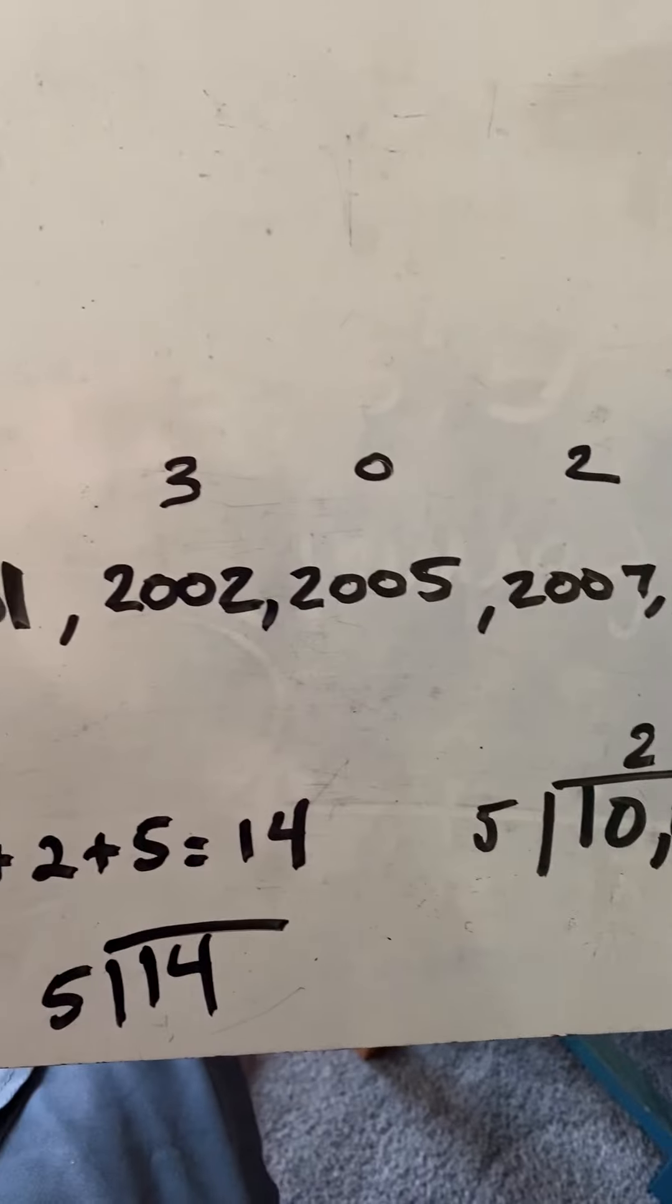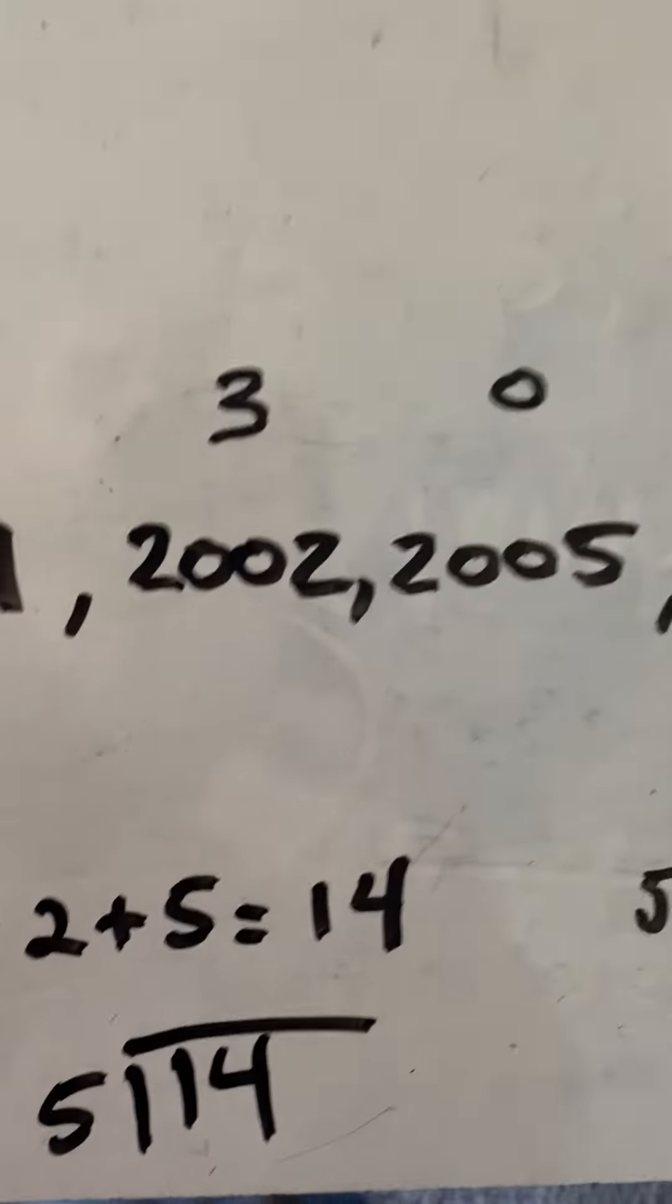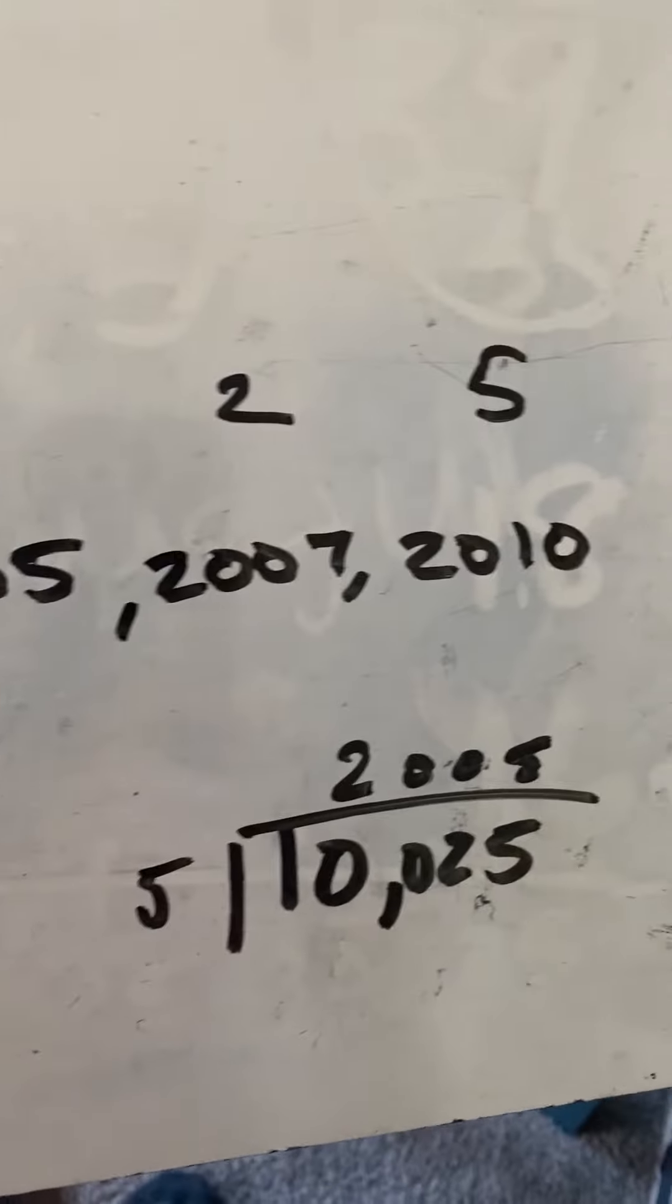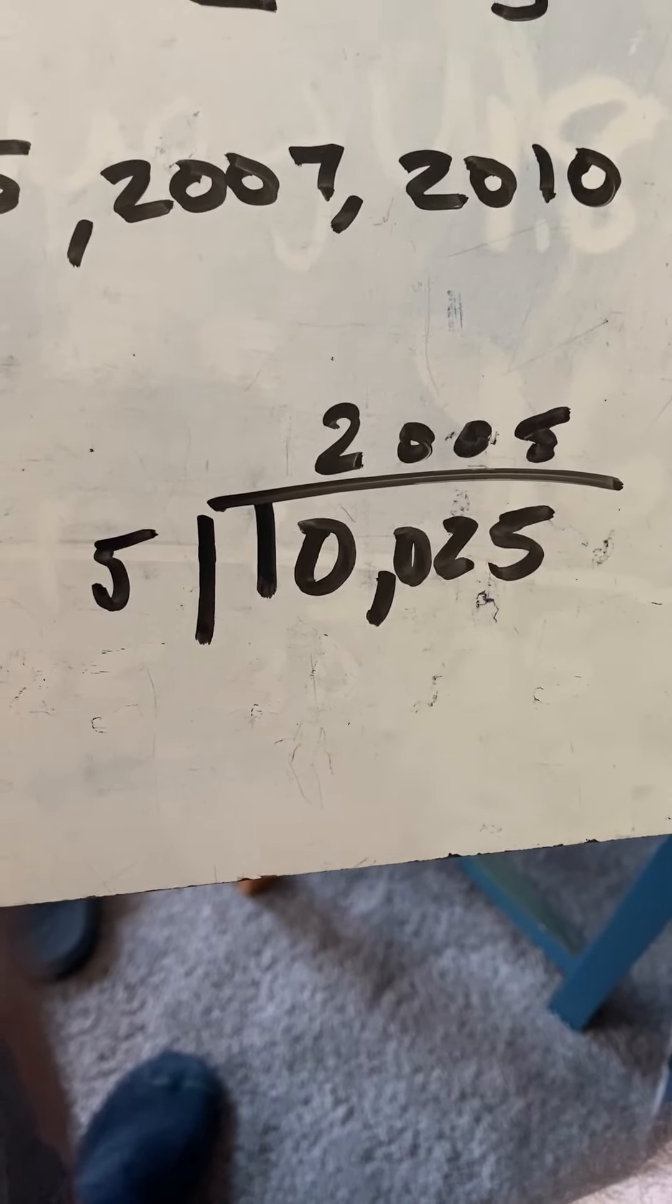Now, it says from the mean, so you have to actually add those numbers. 2001 plus 2002 plus 2005 plus 2007 plus 2010. That gives you 10,025.